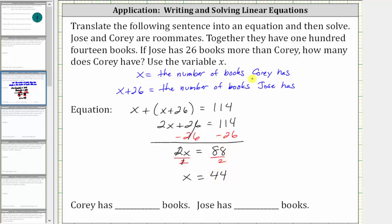Since x is the number of books Corey has, Corey has 44 books. Now for the number of books that Jose has, remember, the number of books Jose has is equal to x plus 26. So for the expression x plus 26, we substitute 44 for x, which gives us 44 plus 26, which equals 70. Jose has 70 books.